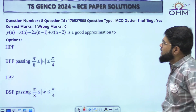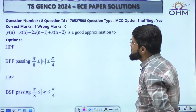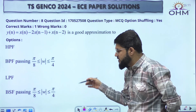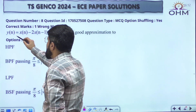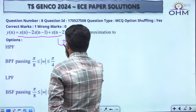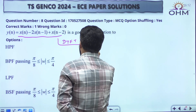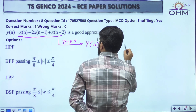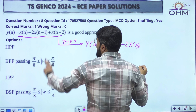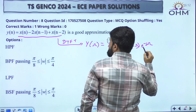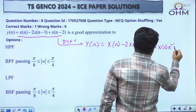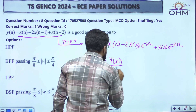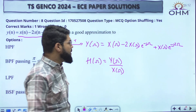Next question: this is also a GATE PYQ directly. A relation between the input and output of a discrete-time system is given, and the question asks whether it approximates a high-pass, band-pass, low-pass, or band-stop filter. To identify the filter type we go into the frequency domain by taking the DTFT on all sides. y[n] has DTFT Y(omega), and using the time-shift property, x[n-1] has DTFT X(omega)e^(-jω), and x[n-2] has DTFT X(omega)e^(-j2ω).